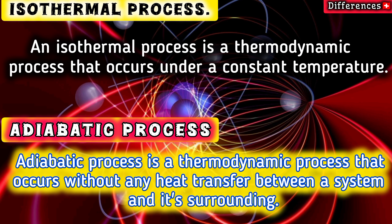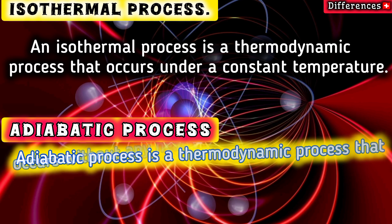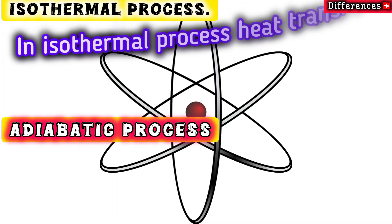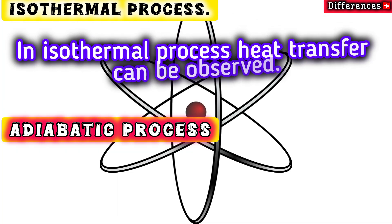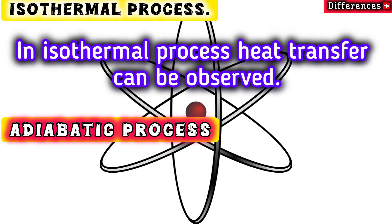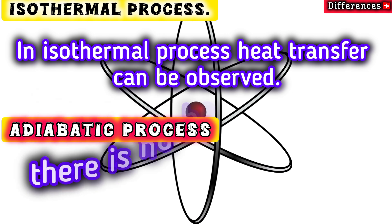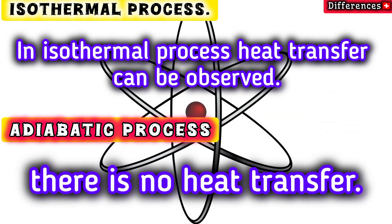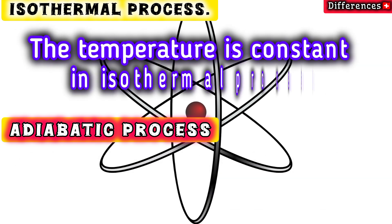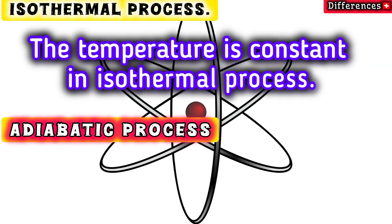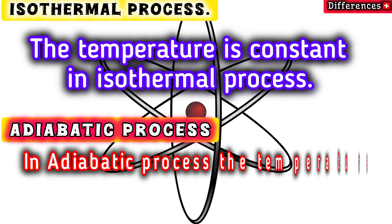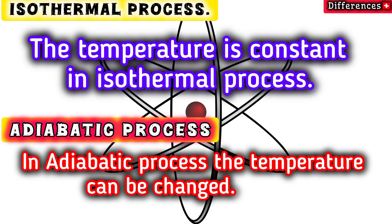In an isothermal process, heat transfer can be observed, while in an adiabatic process there is no heat transfer. The temperature is constant in an isothermal process, while in an adiabatic process the temperature can change.